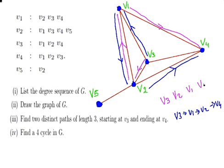So, that's two distinct paths of length three, starting at v3 and ending at v4. Now, what we're going to do is find a cycle of length four in G.